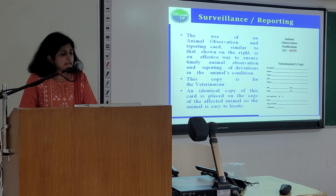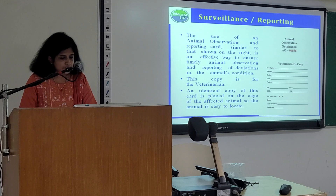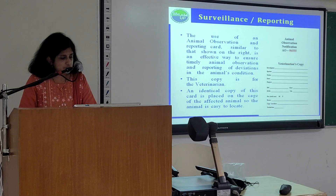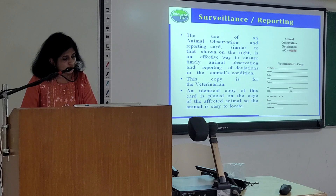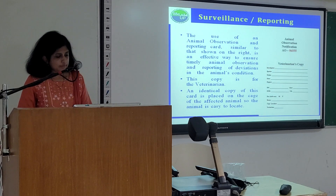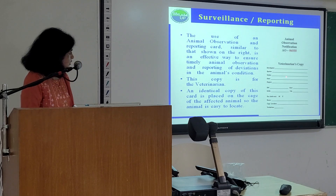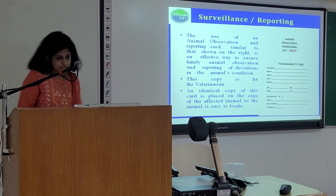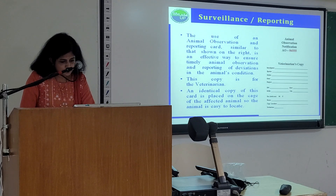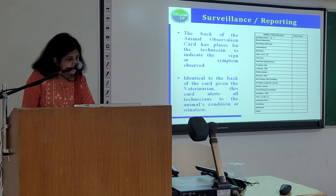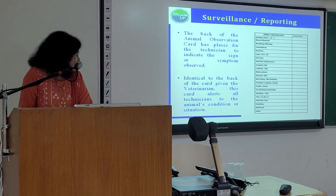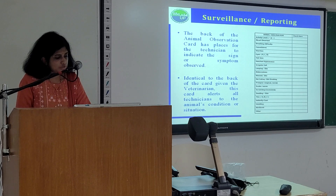For reporting of disease, the use of an animal observation and reporting card is an effective way to ensure timely animal observation and reporting of deviations in the animal's condition. A copy is given to the veterinarian, and an identical copy is placed on the cage of the affected animal so the animal is easy to locate. The card contains the investigator's name, species, strain, date, project, ID number, date of birth, sex, cage, location and technician's signature. The back of the card has spaces for the technician to indicate the sign or symptom observed. This card alerts all technicians to the animal's condition or situation.